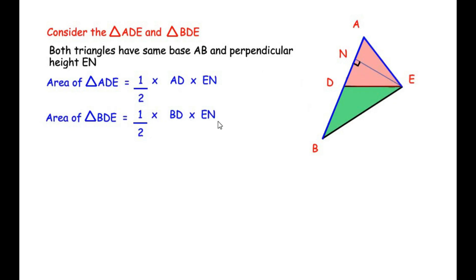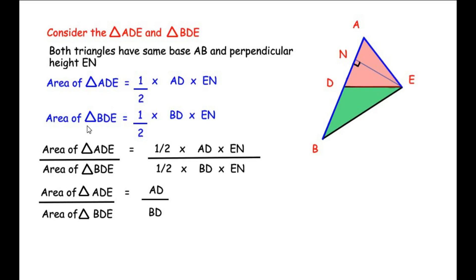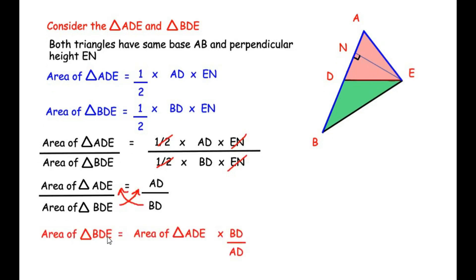Taking the ratio of area of triangle ADE to area of triangle BDE, we get (½ × AD × EN) divided by (½ × BD × EN). The EN and the ½ cancel from both sides, leaving AD over BD. Rearranging, area of triangle BDE equals area of triangle ADE times BD over AD. Let us consider this as equation 1.